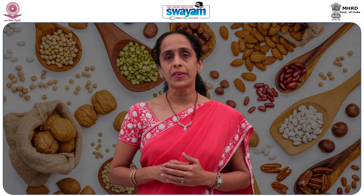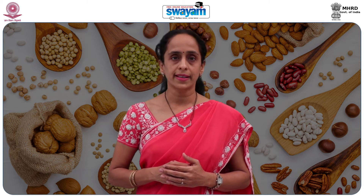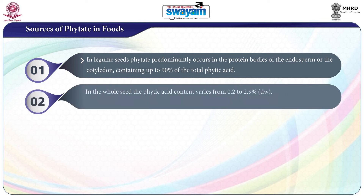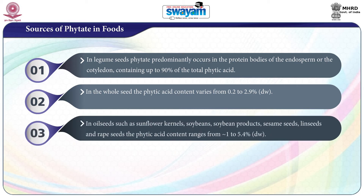Cereal food products may show higher phytic acid contents. In legume seeds, phytate predominantly occurs in the protein bodies of the endosperm or the cotyledon, containing up to 90% of total phytic acid. In the whole seed, the phytic acid content varies from 0.2% to 0.9% of its dry weight. In oil seeds such as sunflower kernels, soybean and soybean products, sesame seeds, linseed and rape seeds, the phytic acid content ranges from 1% to 5.4%.